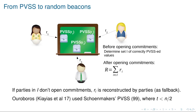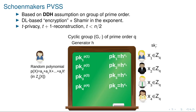We have used this type of beacon using the PVSS by Schoenmakers, which is secure for any honest majority. Some details about this PVSS: we use a cyclic group of prime order q where the DDH assumption holds. The parties that receive shares each choose a secret key in Z_q and publish h raised to that value as their public key.